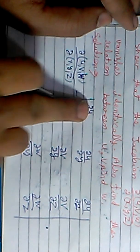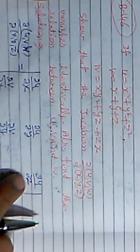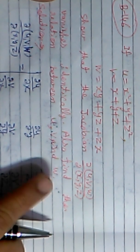We compute partial derivatives of u. When we differentiate u with respect to x, treating y and z as constants, we get 2x. This value goes in the first row, first column. The partial of u with respect to y gives 2y, and the partial of u with respect to z gives 2z — these go in the first row's second and third columns respectively.